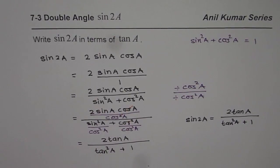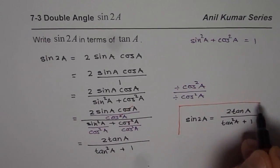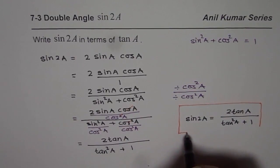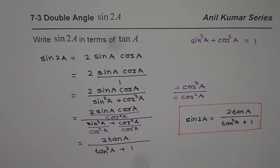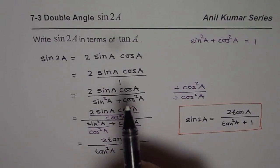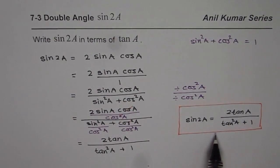That is the way to write sin 2A in terms of tan A. When we explore cos 2A, we will write similar expression for cos 2A, right? I would like you to go through this video once again and understand how we utilized dividing by 1 to get a different identity for sin 2A. I hope that helps. Thank you and all the best.